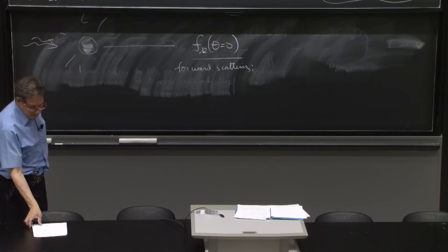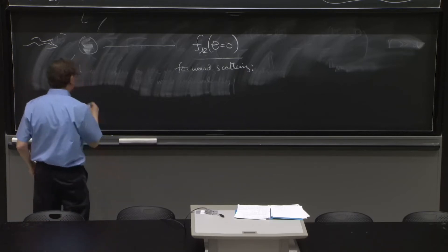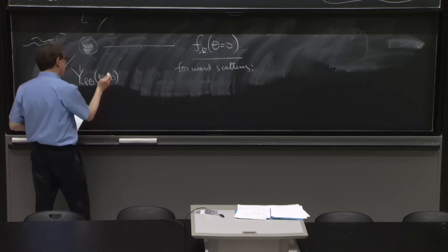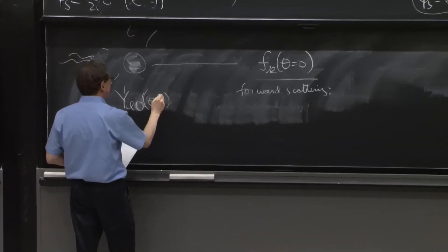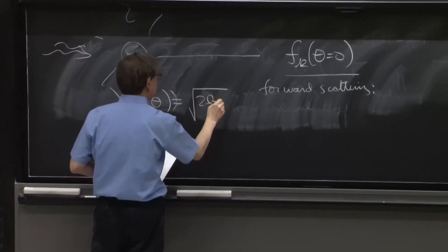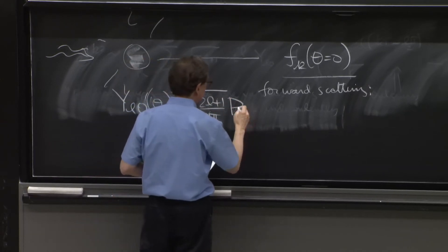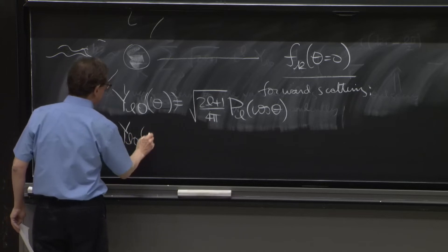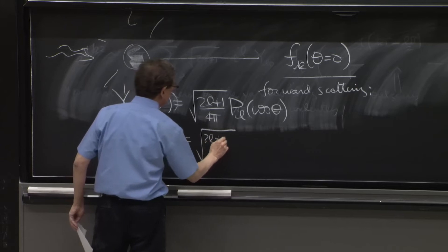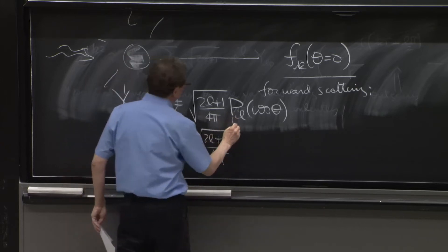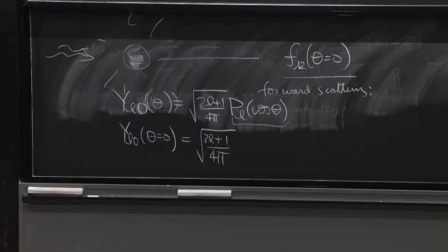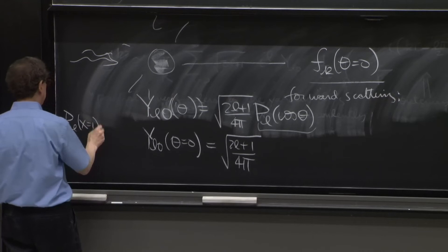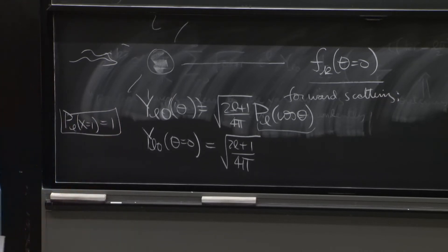And now this forward scattering, we can calculate it. For that, we need to know that y L0 of theta equals 0. Well, y L0 of theta is actually 2L plus 1 over 4 pi PL, the Legendre polynomial of cosine theta. So y L0 at theta equals 0 is just square root of 2L plus 1 over 4 pi. And the Legendre polynomials are defined always so that PL at 1 is equal to 1. All PLs at x equals 1 are always 1.